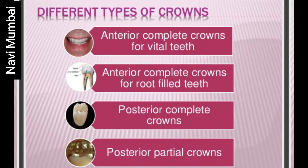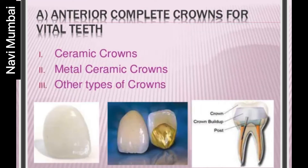Now we will talk about the different types of crowns. First: anterior complete crowns for vital teeth — vital teeth means when there is nerve present inside. Second: anterior complete crowns for root-filled teeth, that is root canal treated teeth. Third: posterior complete crowns. Fourth: posterior partial crowns.